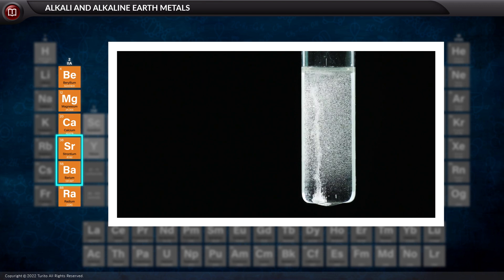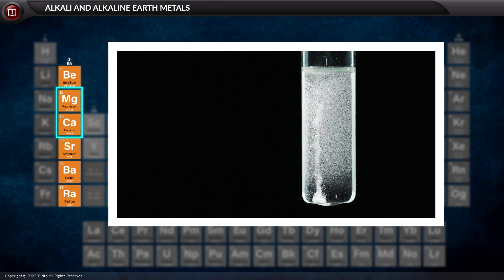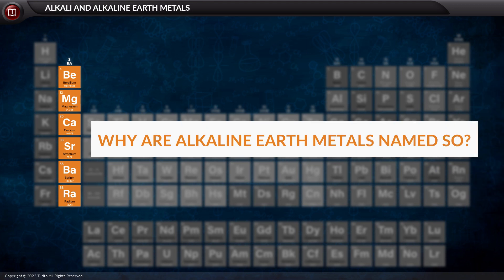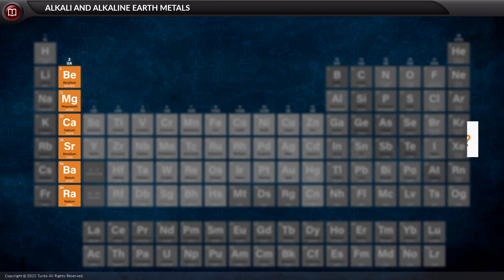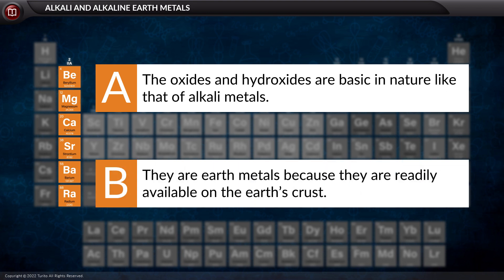The heavier metals of the alkaline earth react more strongly than the lighter ones. Why are alkaline earth metals named so? They are called alkaline earth metals because of two reasons: A, the oxides and hydroxides are basic in nature like that of alkali metals. B, they are earth metals because they are readily available on the earth's crust.